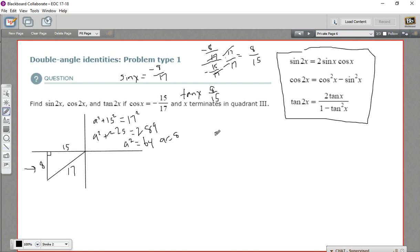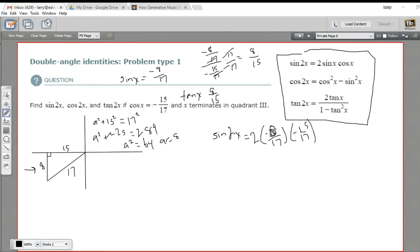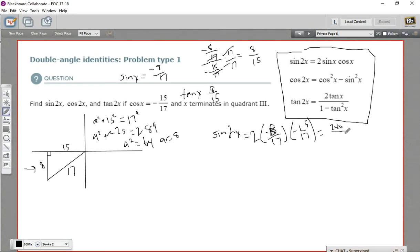Let's try the sine of 2x first. So that is 2 times the sine of x, which is negative 8 17ths times the cosine, which is negative 15 17ths. Negative times a negative is going to be a positive. And across the top, we have 2 times 8 times 15. My calculator says 240. On the bottom, 17 times 17 is 289. So that is the sine of 2x.